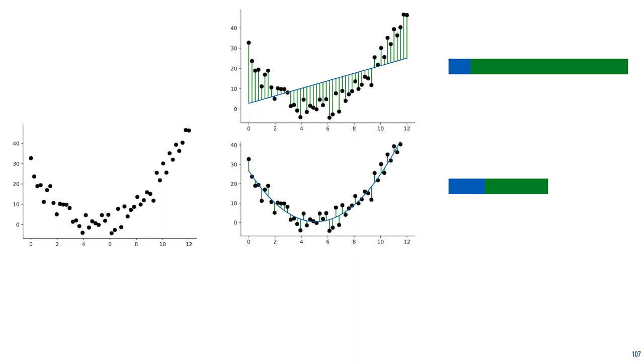If we allow a little bit more model complexity, we can fit a parabola to the data. This requires three parameters, so the amount of bits used to transmit the model grows a little bit, but the residuals get so much smaller that the resulting code length for the whole data is much smaller as a result.